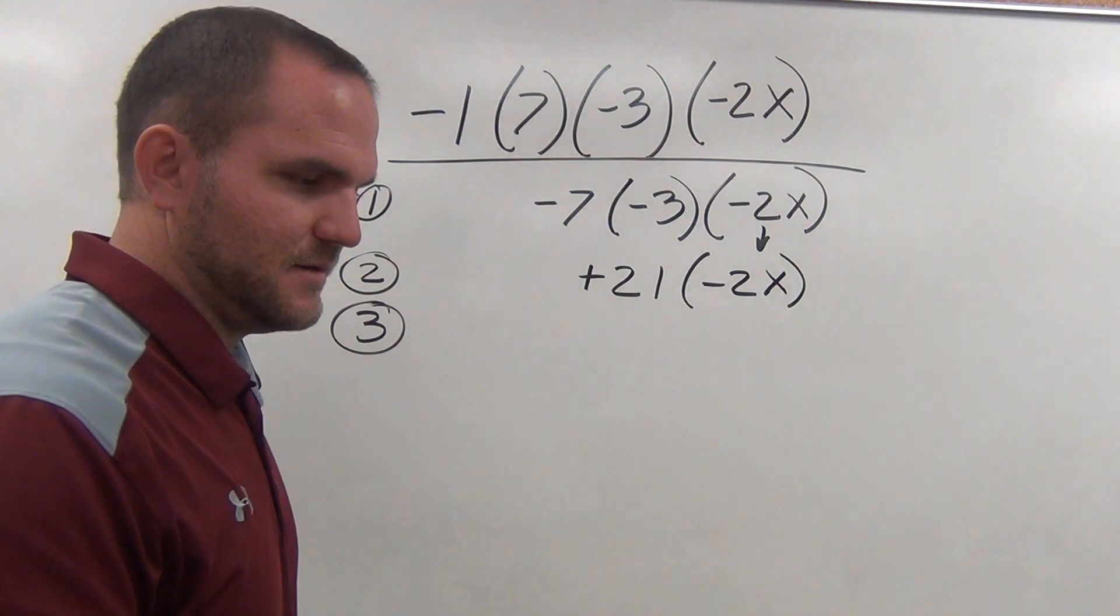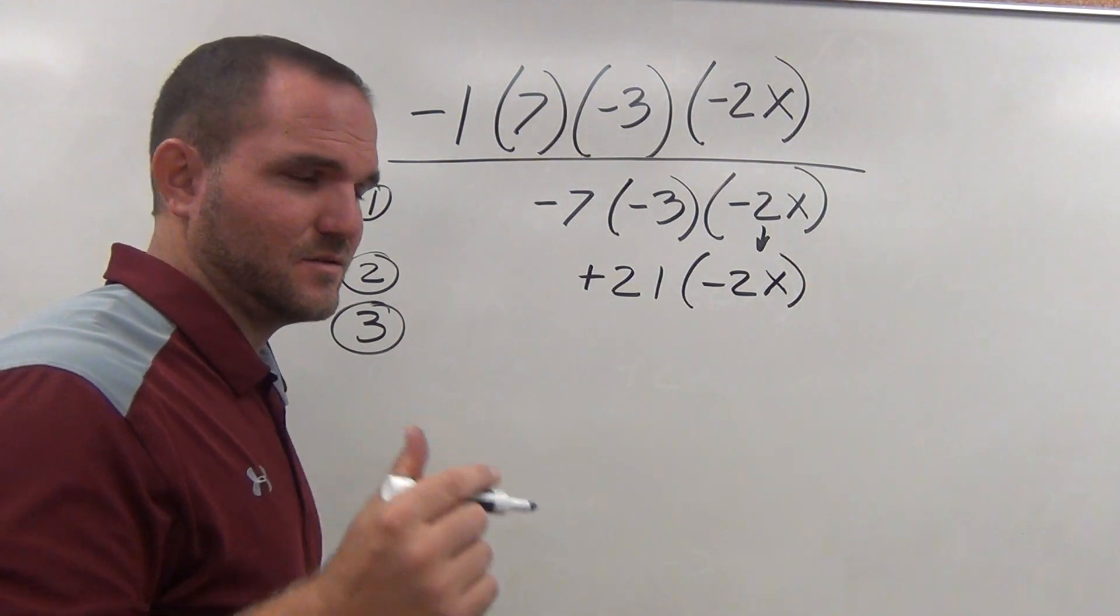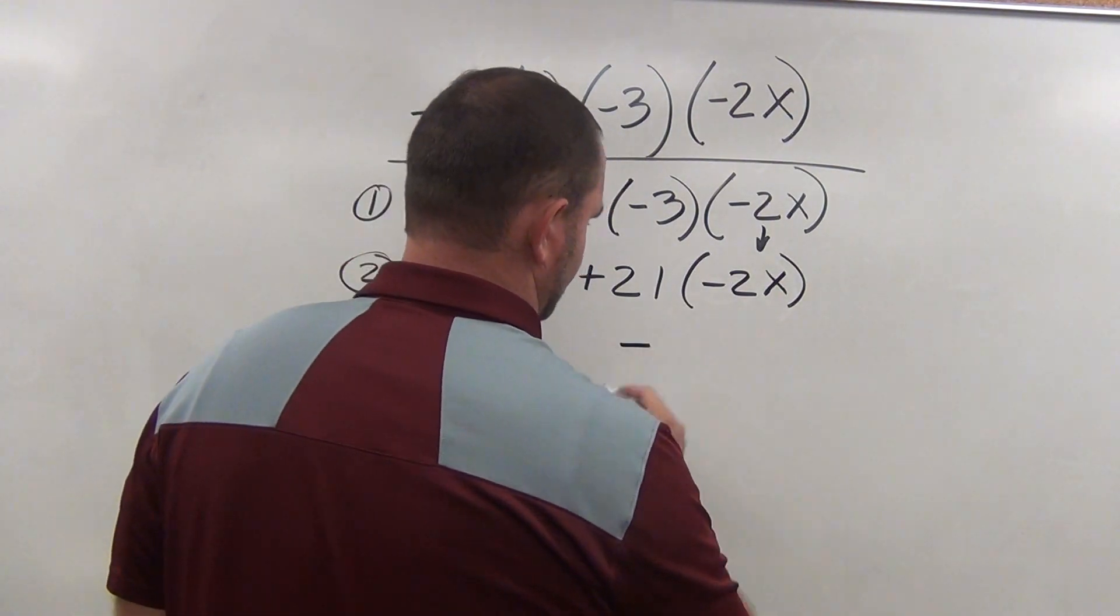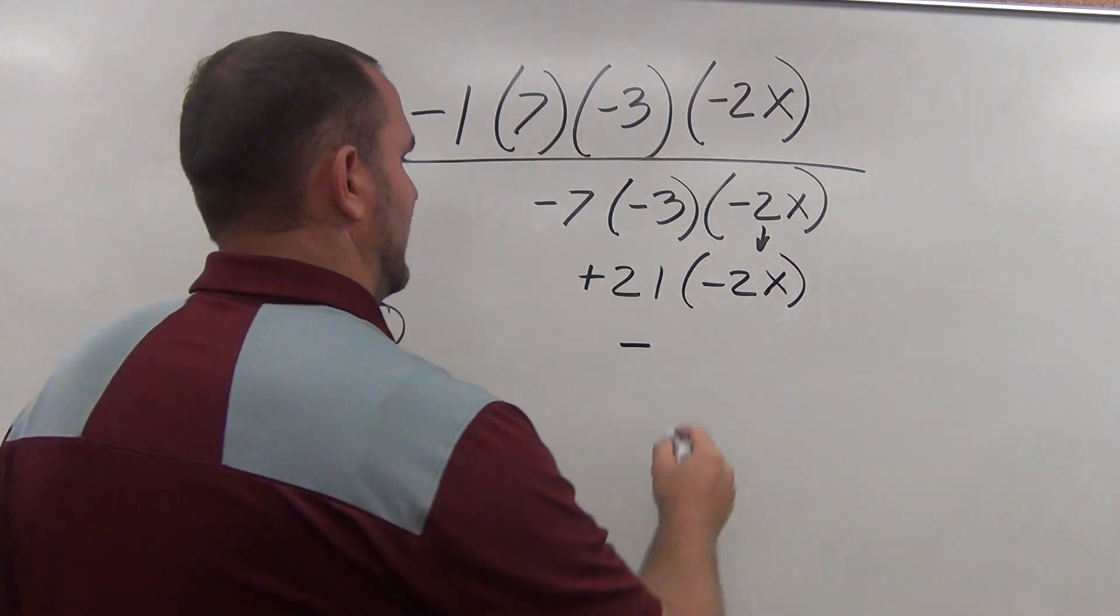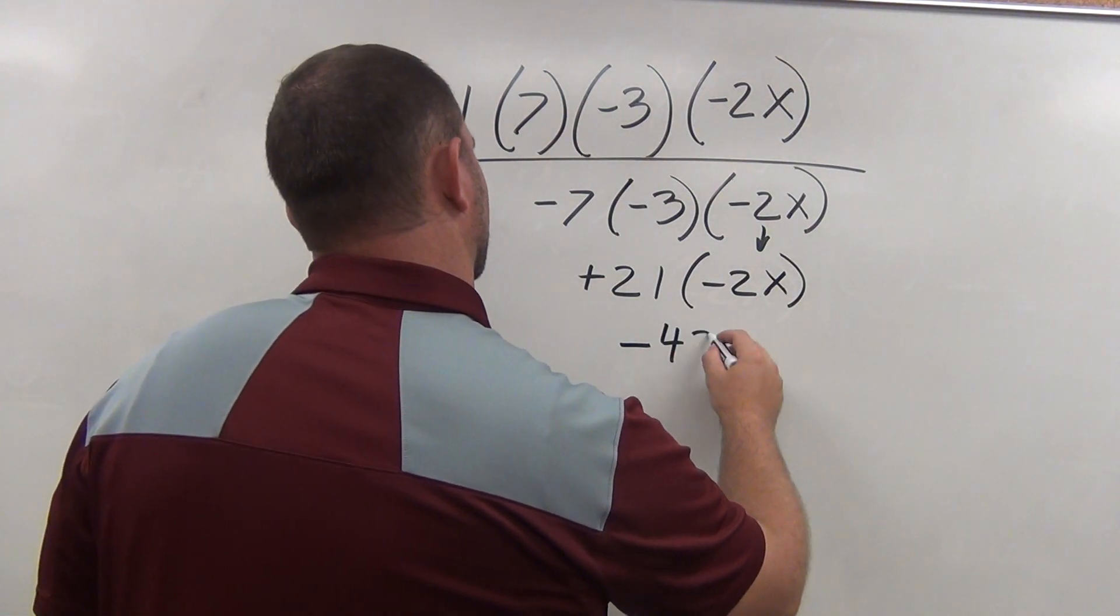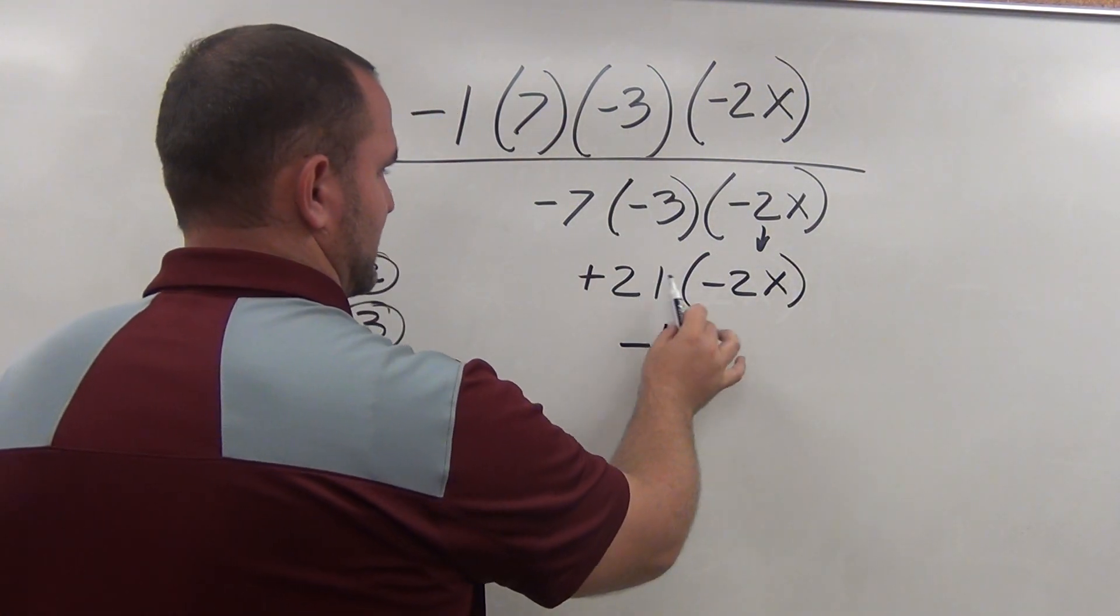So, 21 times negative 2. Our answer is going to be a negative answer. And so, here is your answer for the numbers part. So, that's 42.